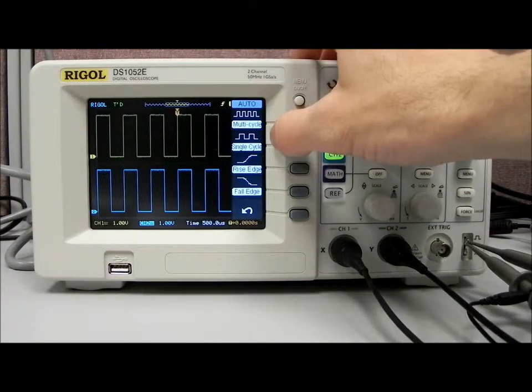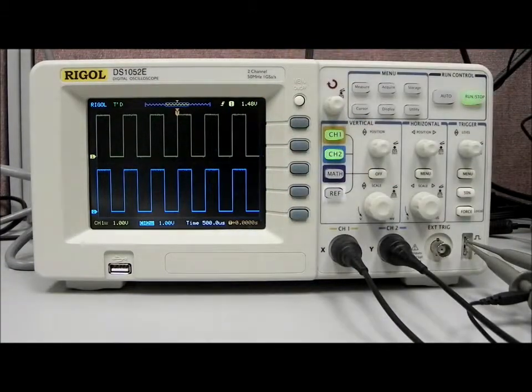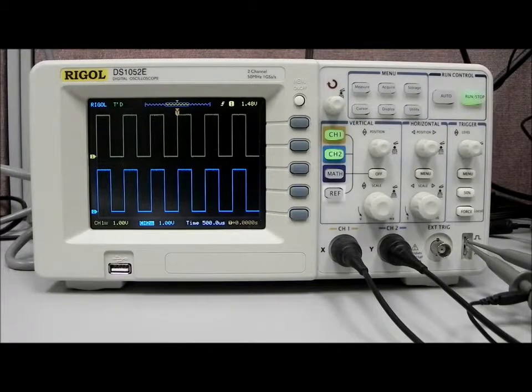So you'll see we have multi-signal, single cycle, rising edge, falling edge, and then we can cancel out. So now we're getting a nice square waves.